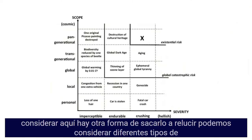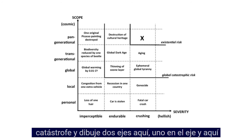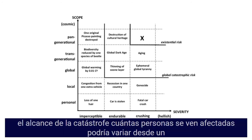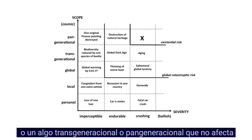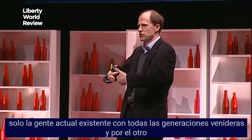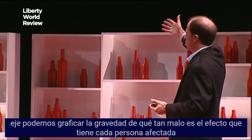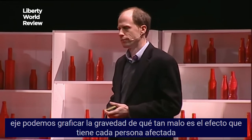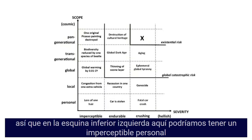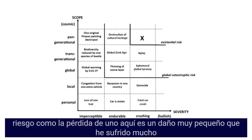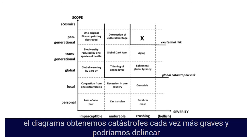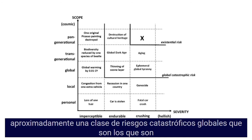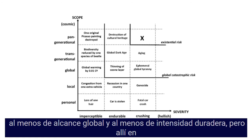Here is another way to bring it out. We can consider different types of catastrophe along two axes. On the Y-axis, catastrophe scope — how many people are affected — ranging from a personal catastrophe up to local, global, or pan-generational, affecting not just current people but all generations to come. On the other axis, we plot severity — how badly each affected person is harmed. As we go toward the upper right, we get increasingly severe catastrophes, and we can delineate a class of global catastrophic risks that are at least global in scope and at least of durable intensity.